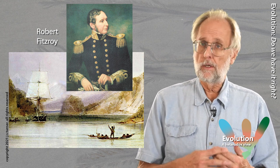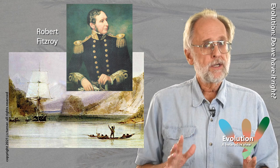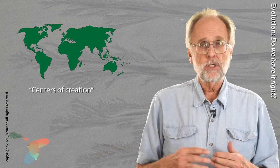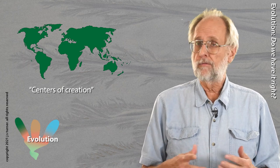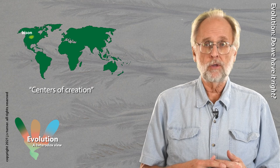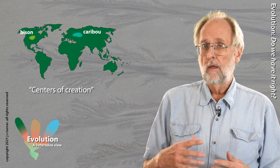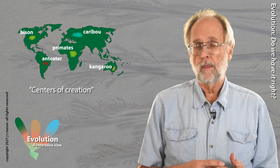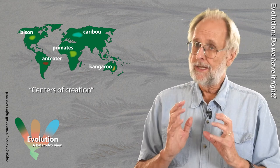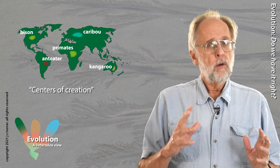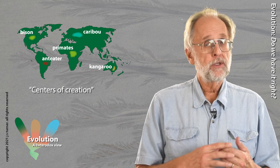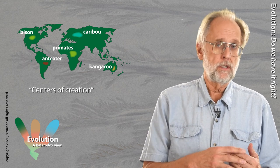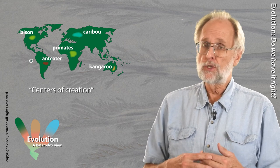When Darwin embarked on the Beagle, he was a creationist of sorts. At the time, the conventional wisdom was that species originated in so-called centers of creation, and this would explain why different continents had different flora and fauna, why bison were in North America and caribou were in Northern Europe, or kangaroos were in Australia, primates in Africa, and anteaters in South America. These creatures were where they were because they had been created there. Darwin had accepted that idea, by and large, and he had hoped to catalogue the idea with his collections during the Beagle's voyage.